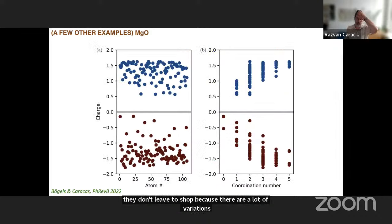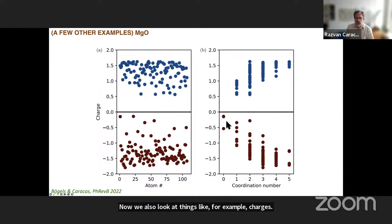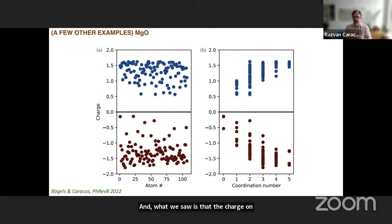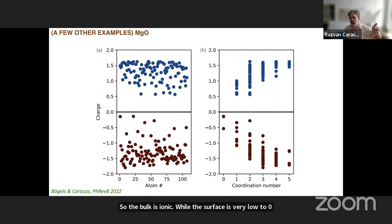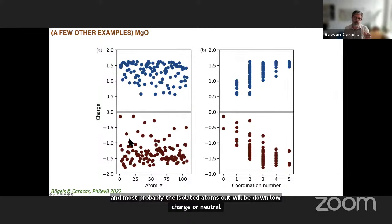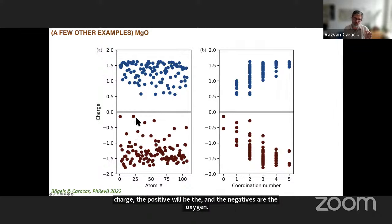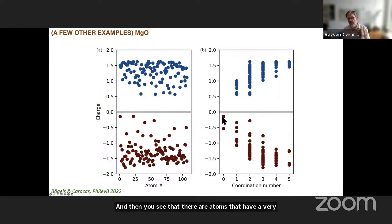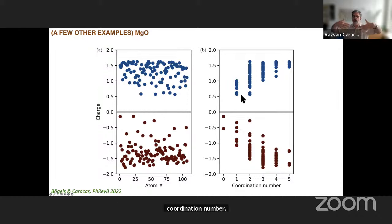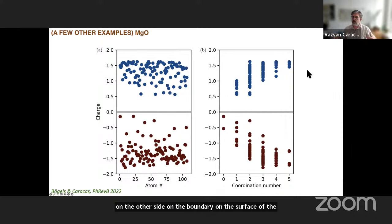We also looked at things like charges, using simulations on MgO. What we saw is that the charge on the atoms in the bulk is very high — the bulk is ionic — while the surface charge is very low to zero. Most probably the isolated atoms would be low-charged or neutral. Every single point in these diagrams represents one atom. The positive would be the magnesiums and the negatives are the oxygens. There are atoms that have a very low charge, and the same atoms also have a very low coordination number, meaning these atoms are on the boundary, on the surface of the bubble. While the ones that have large charges correspond to the bulk — the bulk is highly ionized.